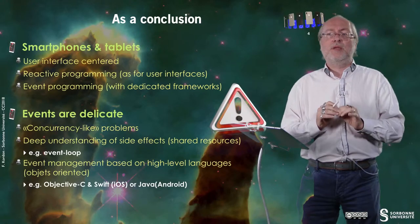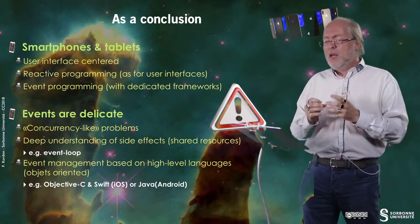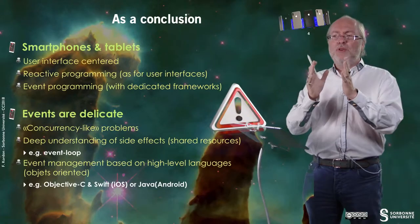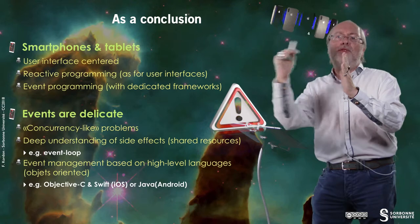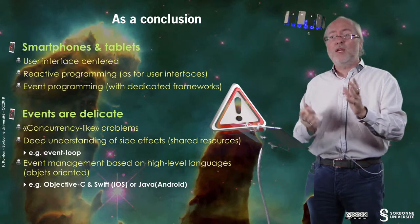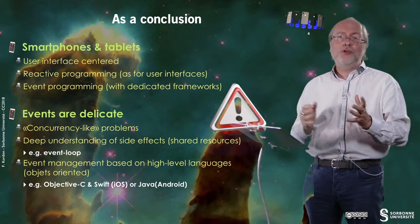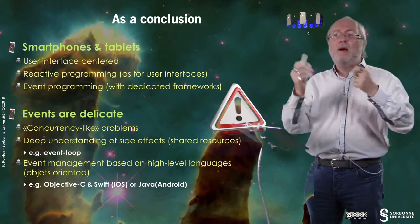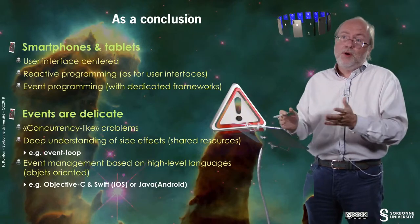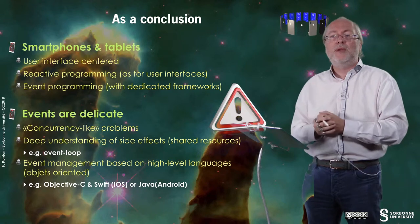You have to remember that events are delicate because they generate concurrency-like problems. Concurrency is when you have several paths of code executing simultaneously. This is more or less the case here because you can have an event that generates the execution of a handler, and when you execute the handler you may have another event that generates the execution of another handler. Sometimes the second event may have a higher priority than the first one, and so you will interrupt the first handler. It's important because when you have shared resources — a variable that can be manipulated by both handlers — you have to be careful on the way you use it, for example in what we call an event loop.